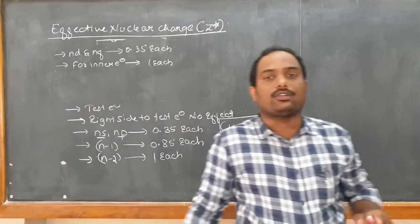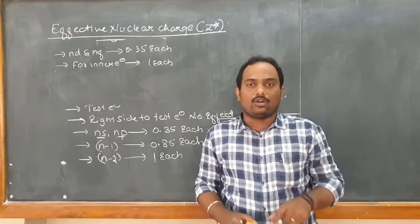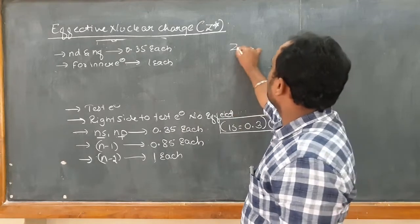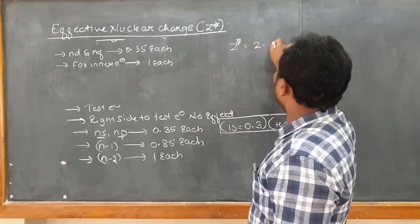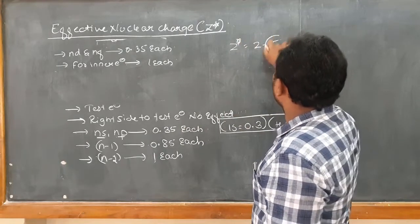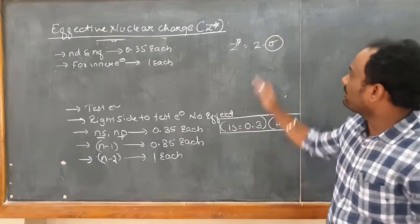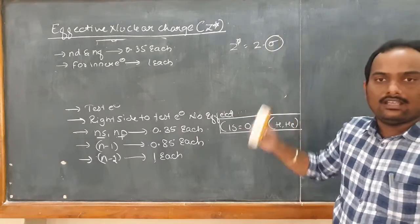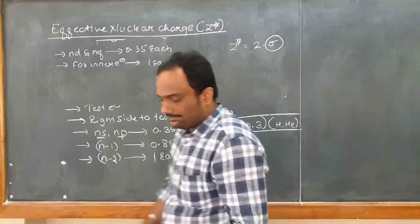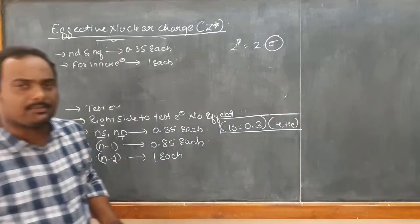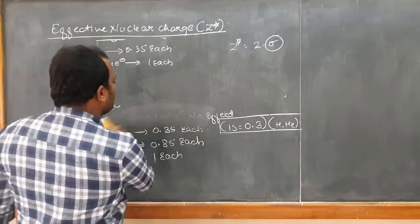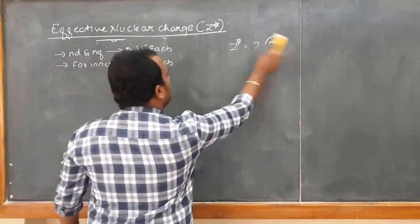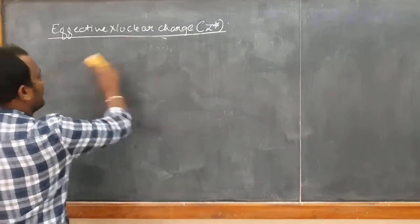To summarize: if the test electron is in Ns and Np, take 0.35 for same-group electrons, 0.85 for N-1 electrons, and 1 for N-2 and below. If in Nd and Nf, take 0.35 for same-group electrons and 1 for all inner electrons. Once you have sigma, substitute into Z star = Z minus sigma.